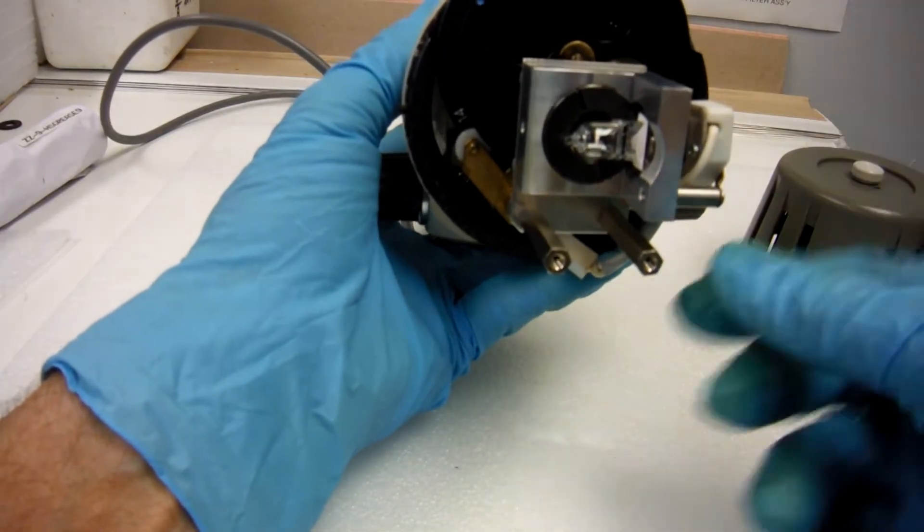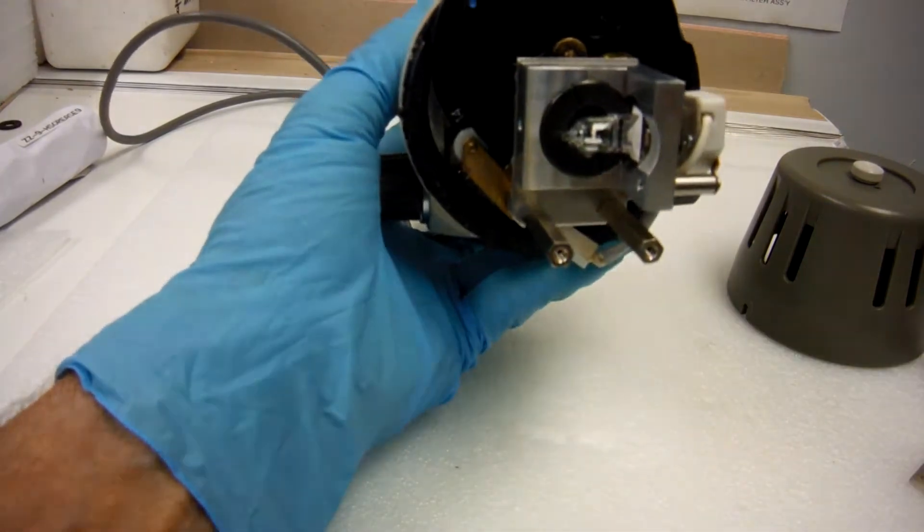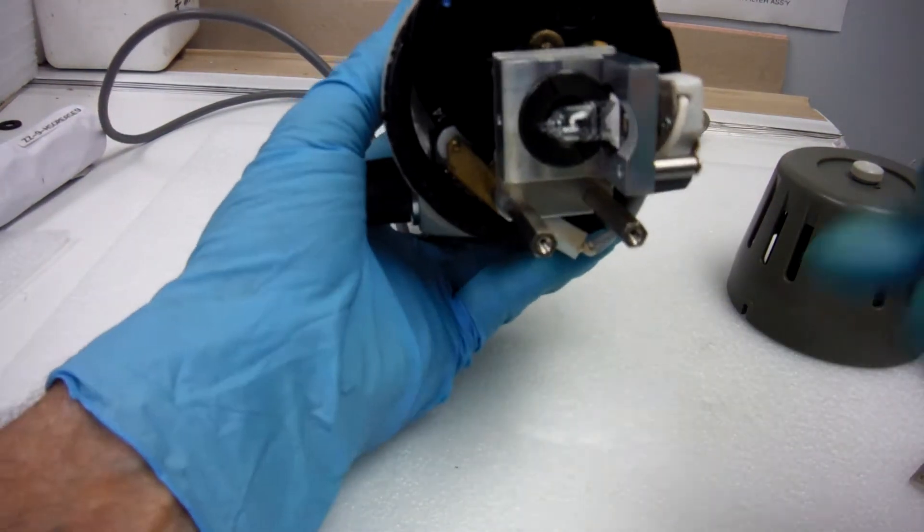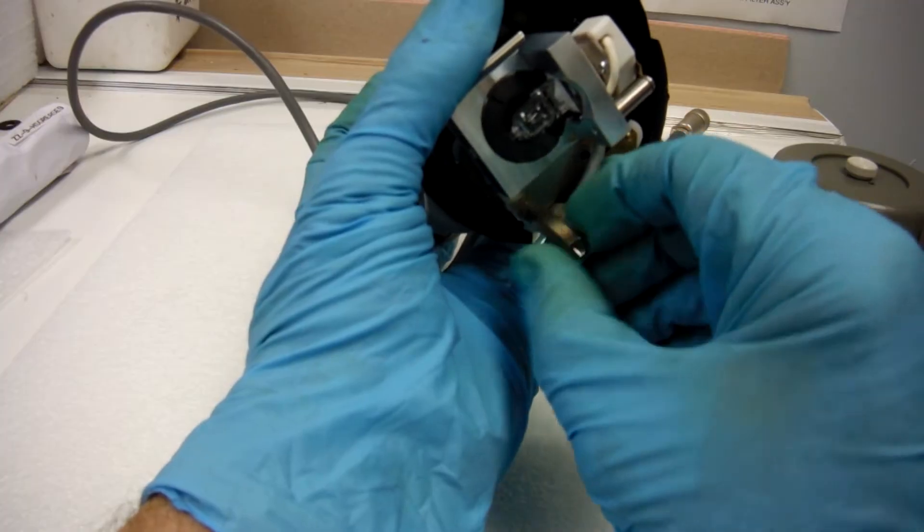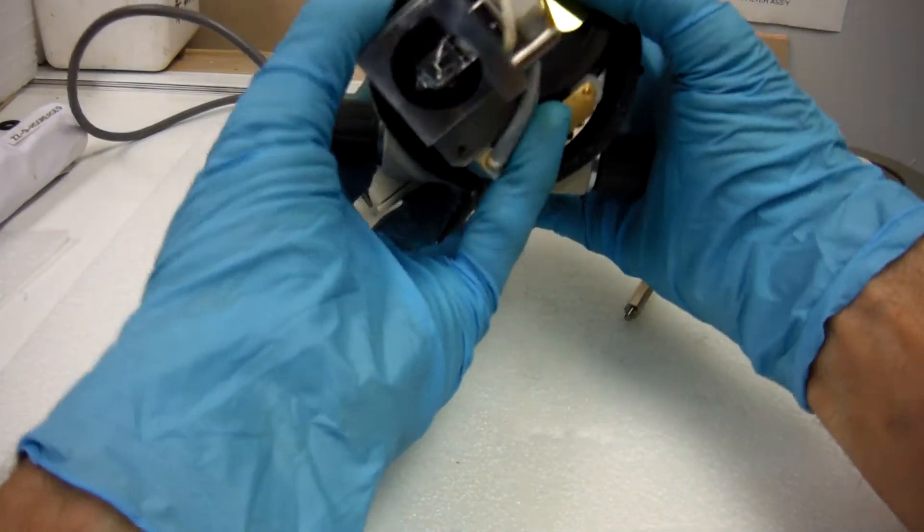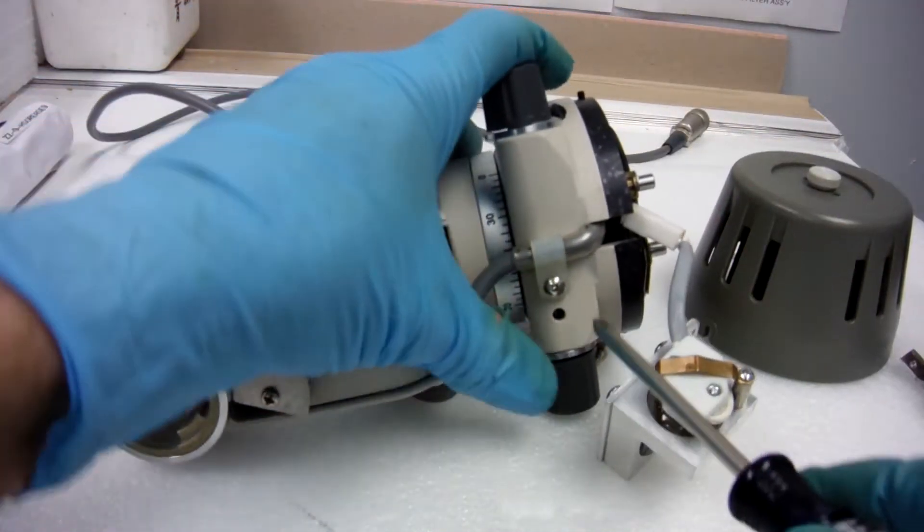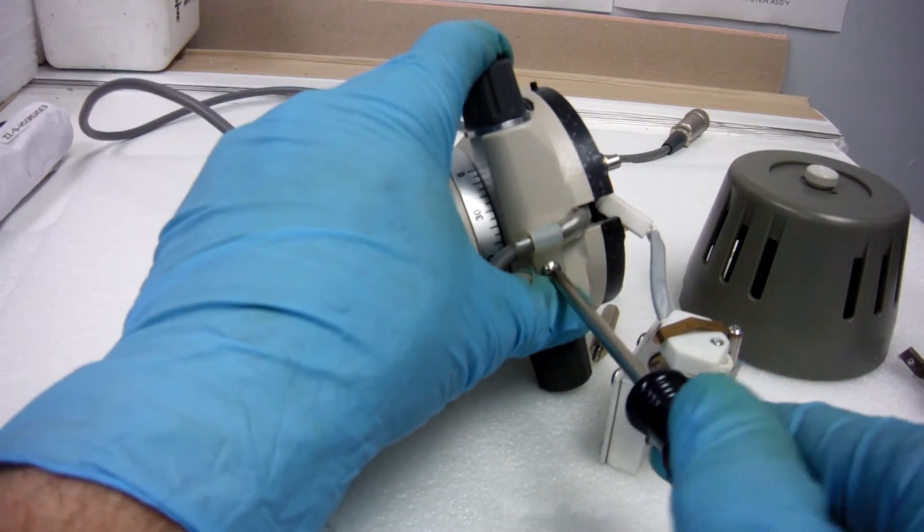You have two studs holding this lamp housing on. Get your crescent. Unscrew these. We'll remove this bottom screw holding the wire harness on.